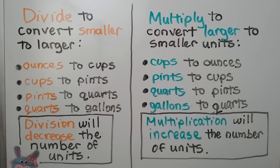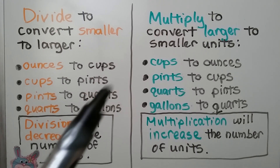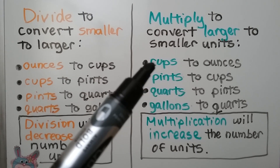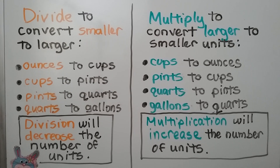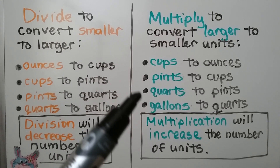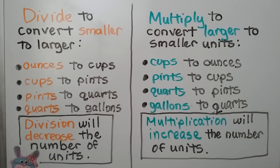Division will decrease the number of units. We multiply to convert larger units to smaller units. Cups are larger than ounces, so to go from cups to ounces we would multiply. And for pints to cups, quarts to pints, or gallons to quarts, multiplication will increase the number of units.